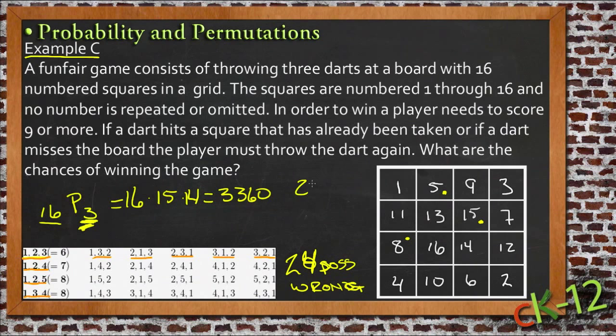So if we take our 24 ways of losing the game and divide it by the total number of ways to play the game, 3,360, then we get 1/140, which means that there are 139/140 ways to win the game, which is much much easier.